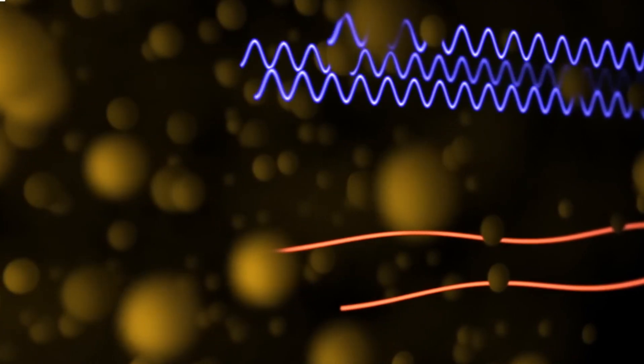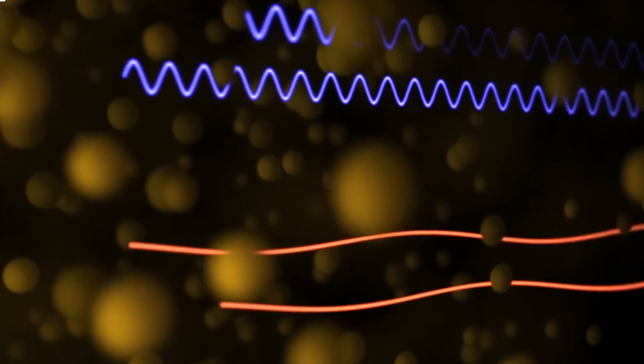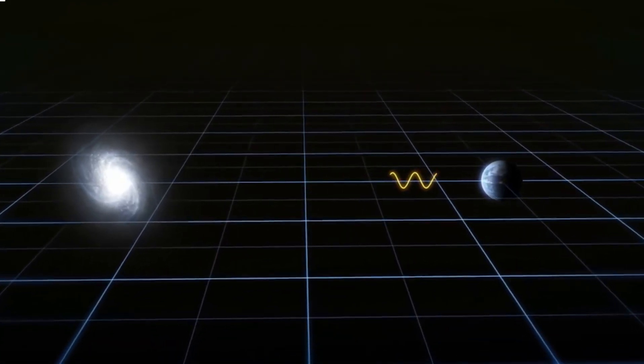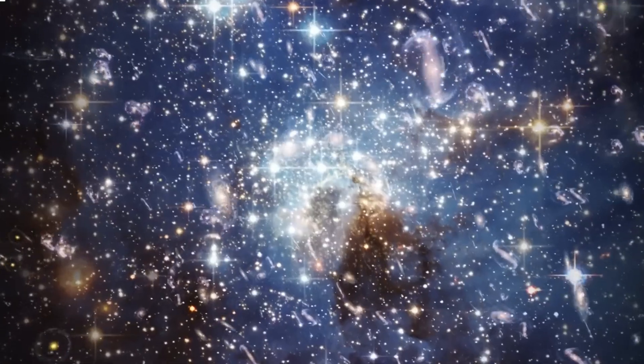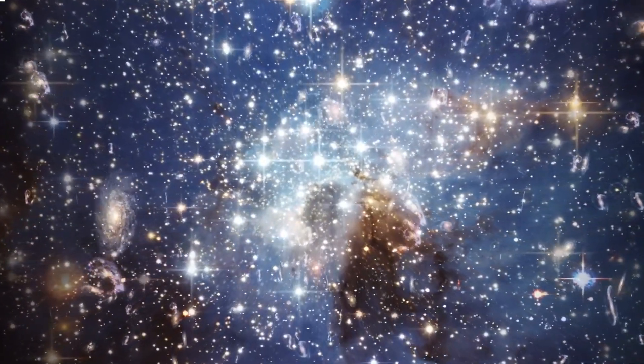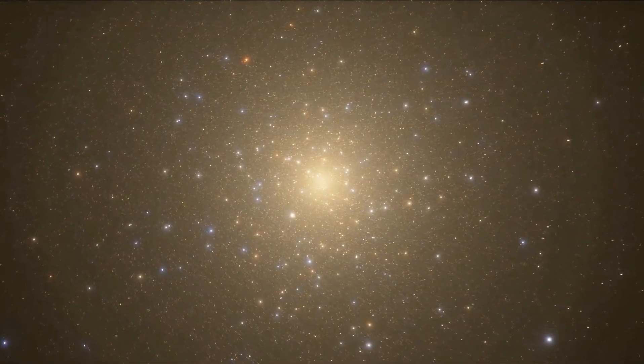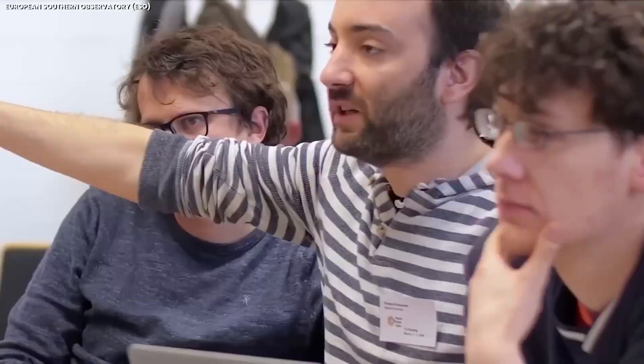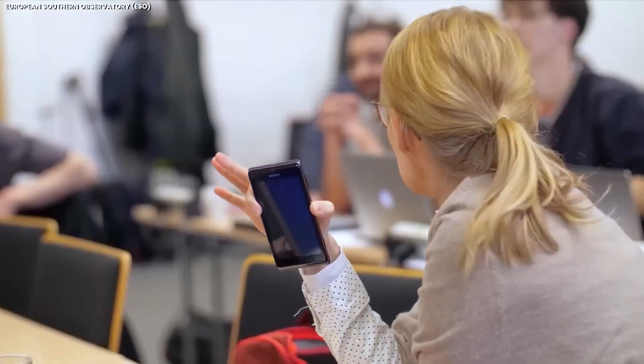The basic picture is this: a cloud of cold gas collapses under its gravity, leading to the formation of large numbers of new stars all at once. These stars come in all different masses, colors, and brightnesses, and the largest, bluest, brightest stars burn through their fuel first.